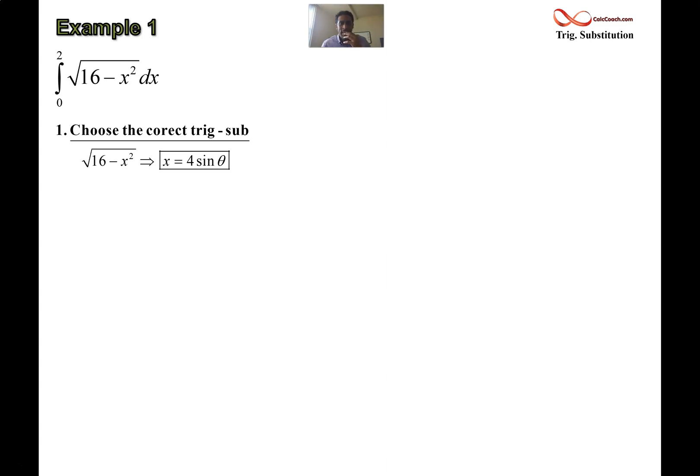Which one, though? Well, if you're in the format of a squared minus x squared, then you let x equal a sine theta. So in this case, a is 4, you should let x equal 4 sine theta. Why? What's going to happen? Why would you do this substitution?